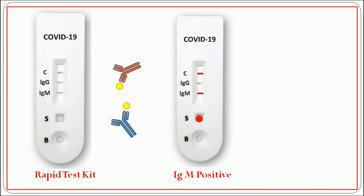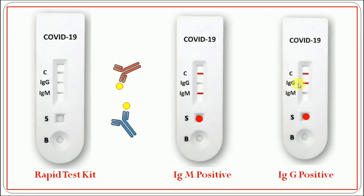For a valid test, color has to be present in the C strip or the control line; otherwise the test is invalid. If the color reaction is shown in the IgM strip, then the result is IgM positive, which means the person has an active infection. If the color is shown in the control strip as well as the IgG strip, then it is an IgG positive reaction, indicating a past infection or a person who has recovered from the infection. Research is ongoing, and in the near future we might get more updated data or updated techniques.